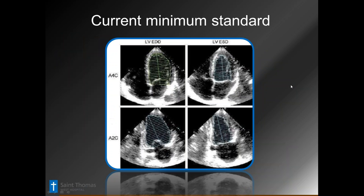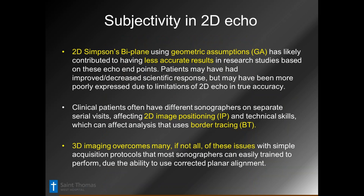The current minimum standard for our center — and I think any center serious about doing really good work system-wide — is at least biplane volume. It's a very good technique for EF and overall sense of volume, very robust. But there's been good work done showing that there are a lot of assumptions we make in 2D. Clinically, between sonographers, people tend to get a different angle, a little different spot on the rib cage, and between sonographers we tend to have some subjectivity.